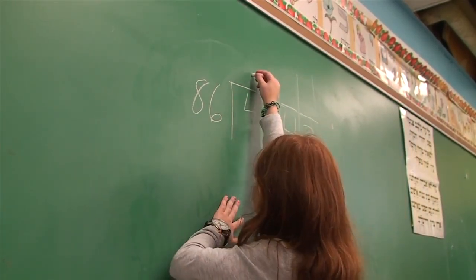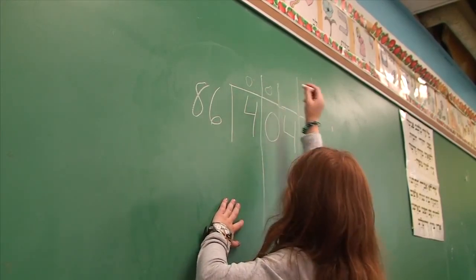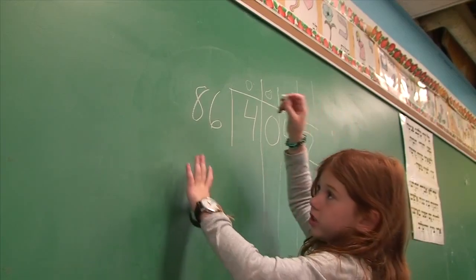4 divided by 86, you can't do it. 40 divided by 86, you can't do it. 400 divided by 86, you can't do it.